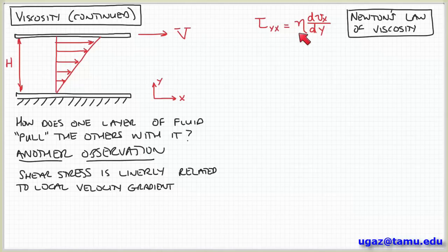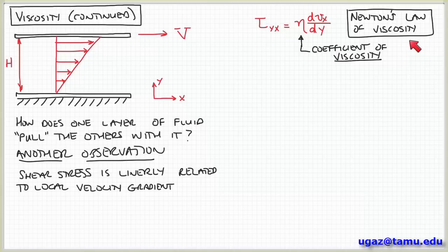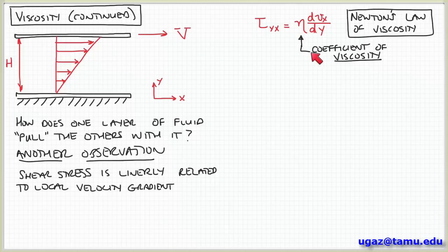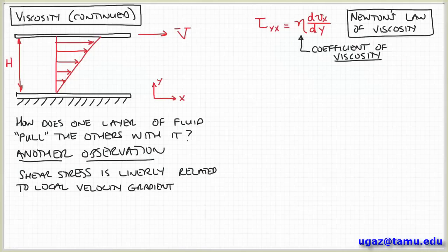The constant eta is the viscosity coefficient, and this equation is called Newton's law of viscosity. It's similar to Hooke's law for a spring — f equals kx — where force is related to deformation. Here for a fluid, the shear stress is related to velocity gradients, and that proportionality constant is the coefficient of viscosity. We thought about viscosity qualitatively as resistance to flow, but this is a more precise definition describing how the fluid responds to deformations.